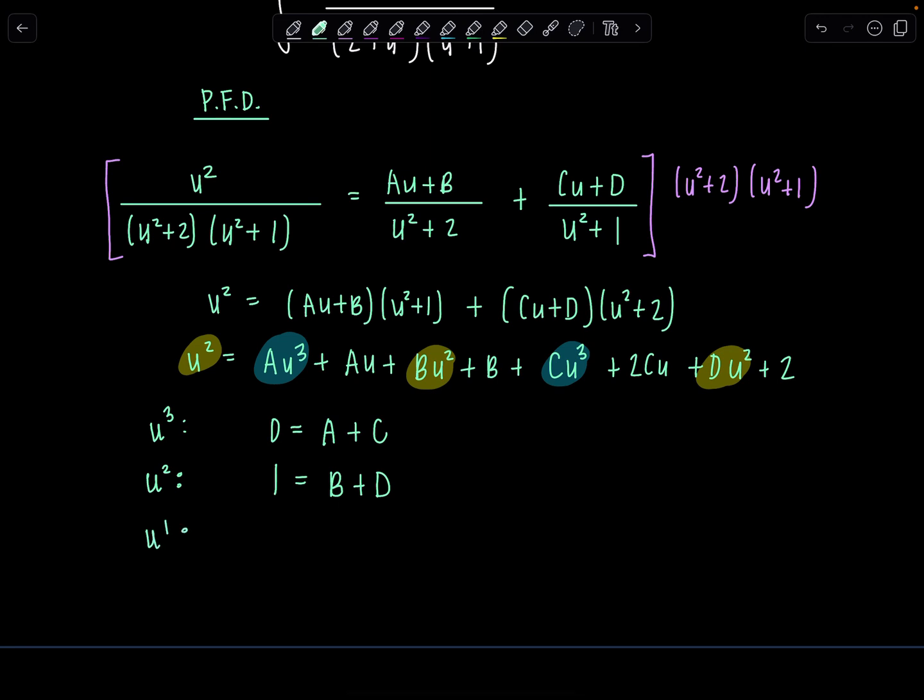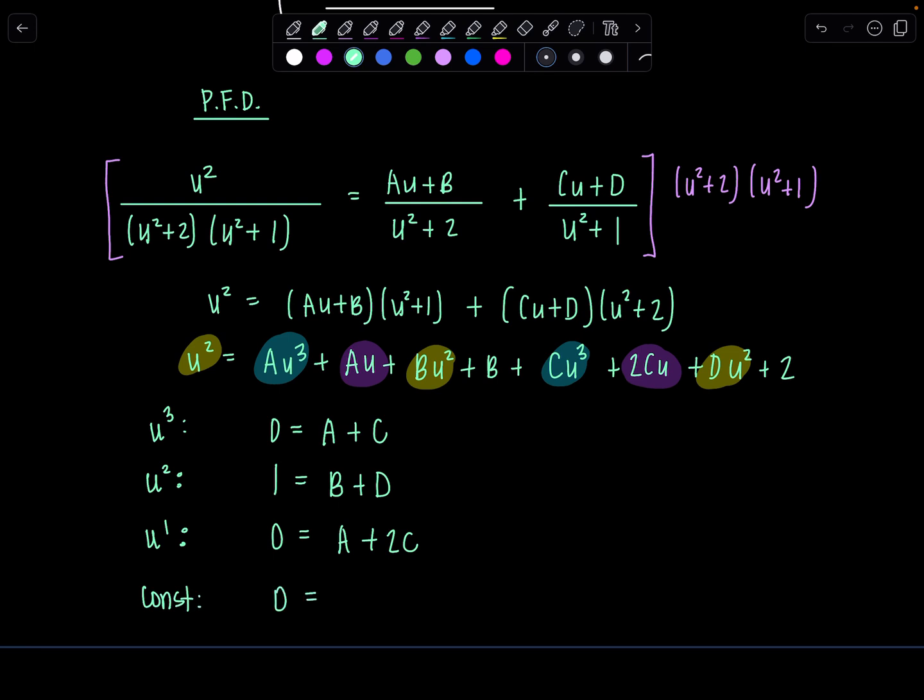U to the first, I don't see any on the left, and there is au and 2cu on the right. So zero equals a plus 2c. And then lastly, u to the zero or your constant, there aren't any constants on the left, and then I think you can see who's left over. We've got b plus 2d. So zero equals b plus 2d.